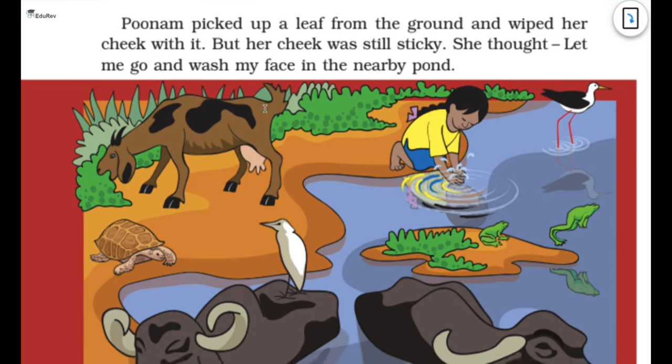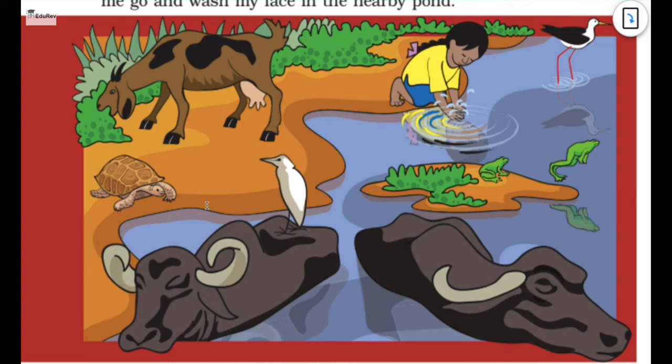Now Poonam picked up a leaf from the ground and wiped her cheek with it. But her cheek was still sticky. She thought let me go and wash my face in the nearby pond. So she went to the nearby pond to wash off her face. We can see goat, turtle, buffaloes, a bird here, frogs, and here Poonam.